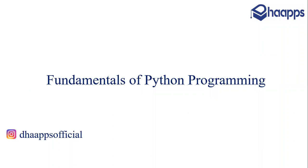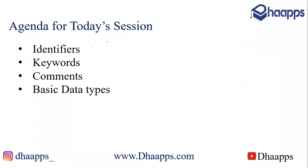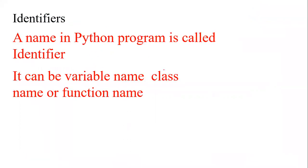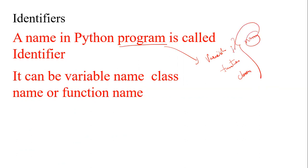In today's session we will see the fundamentals of Python programming. When it comes to the fundamentals of programming, you have to be aware of identifiers, keywords, comments, and basic data types. Any program you take, any language, it contains variables, functions, and classes. These are denoted using some names — the name given to all these things is nothing but an identifier. An identifier can be a variable name, a class name, or a function name.